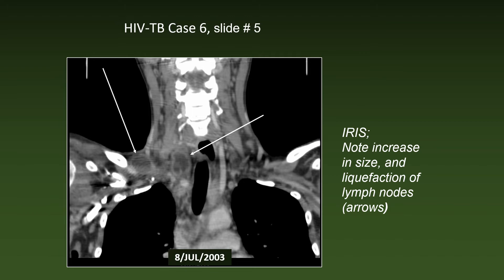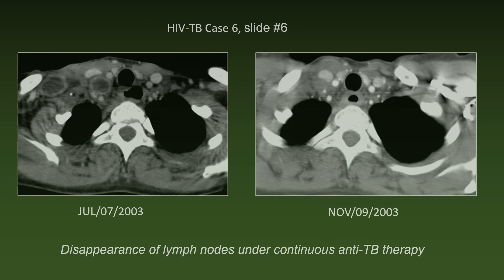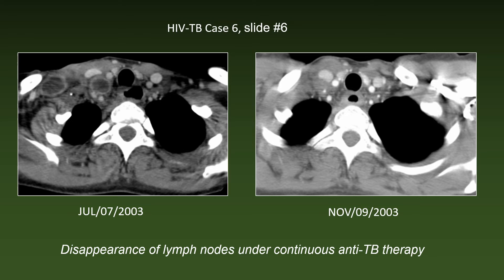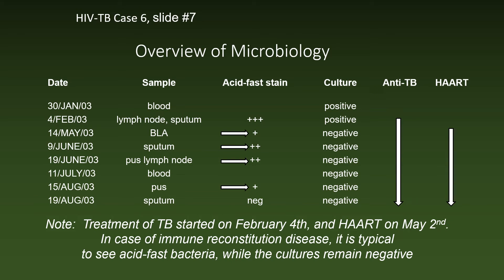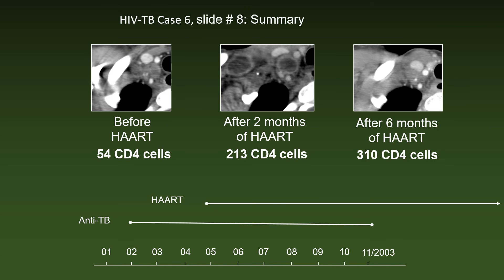Lymphadenopathy and liquefaction is also evident in the coronal section. Under continued anti-TB therapy plus HAART, the enlarged lymph nodes gradually disappeared and were no longer visible at the end of anti-TB therapy on November 9th, 2003. Note that anti-TB treatment started in February while HAART started in May. In case of IRIS, it is typical to see acid-fast bacteria while the cultures remain negative.